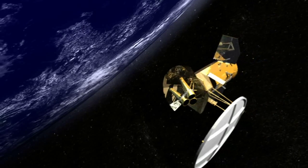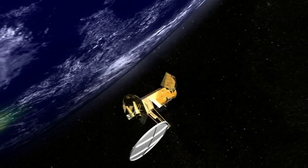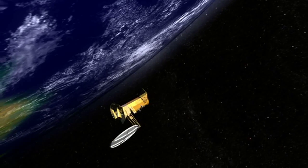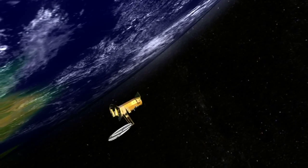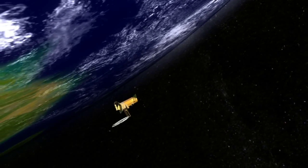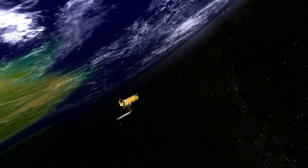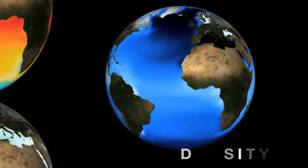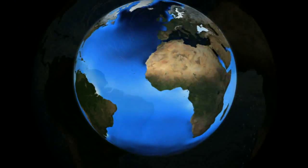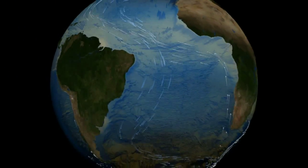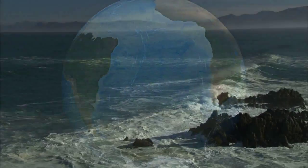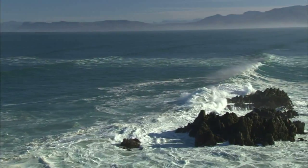In the first two months of Aquarius' launch, the satellite will gather more salinity data than in the last 125 years. This mission will help scientists better understand how salinity and ocean circulation are tied to global climate, and how both systems are changing throughout time.